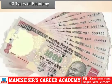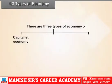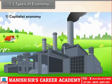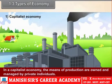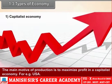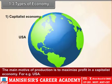1.3 Types of Economy. There are three types of economy: 1. Capitalist Economy, 2. Socialist Economy, 3. Mixed Economy. In a capitalist economy, the means of production are owned and managed by private individuals. The main motive of producers is to maximize profit. For example, USA.